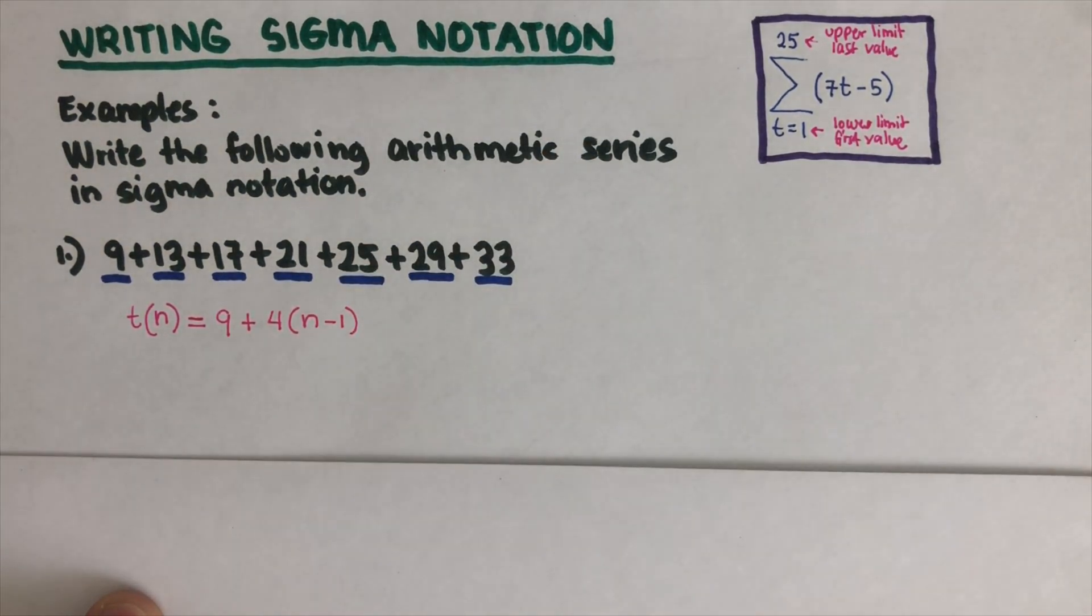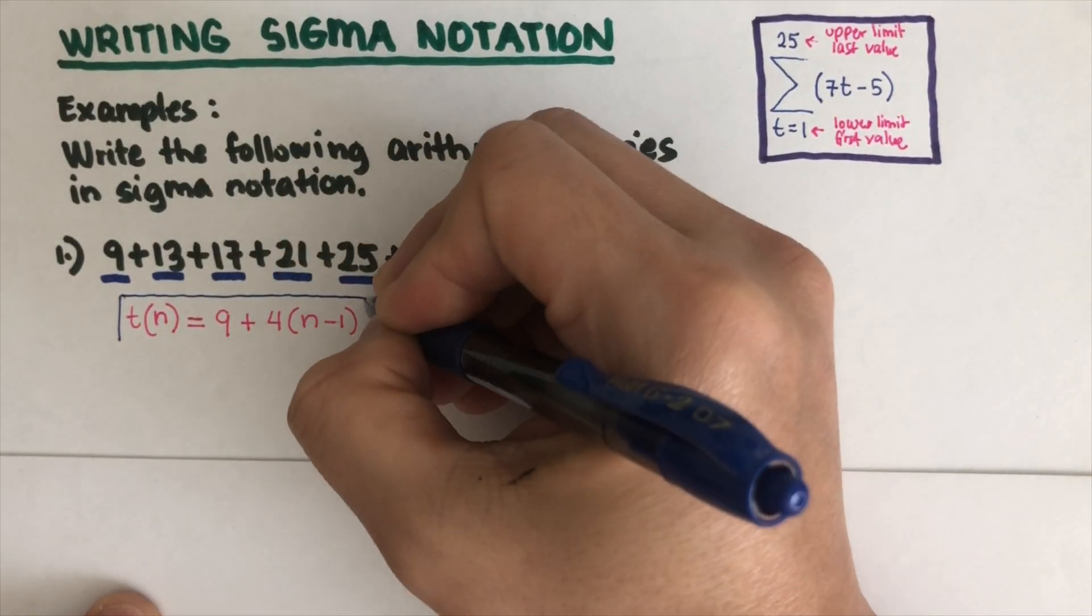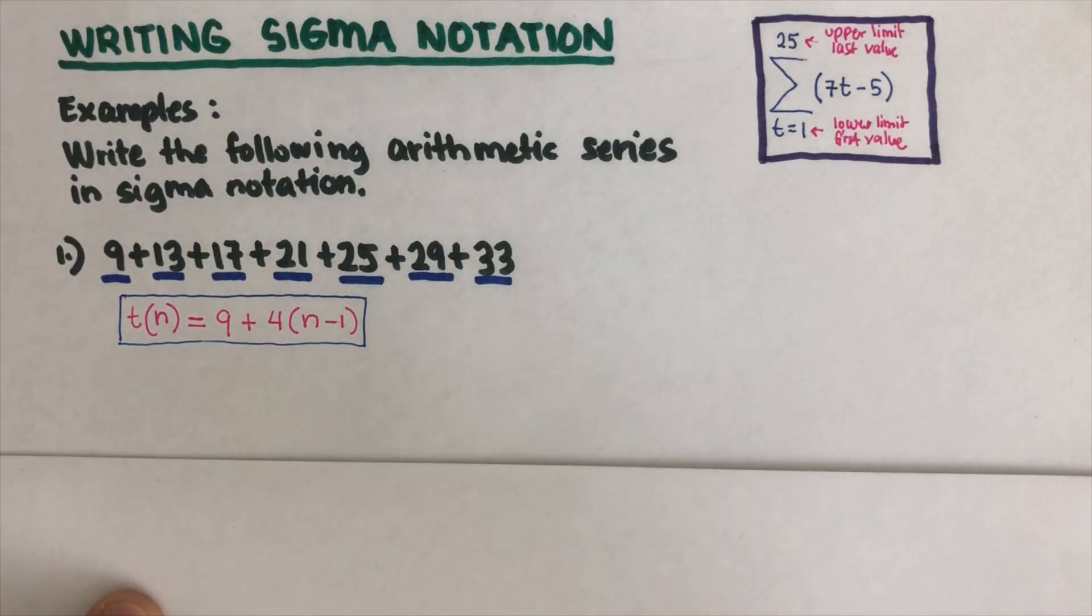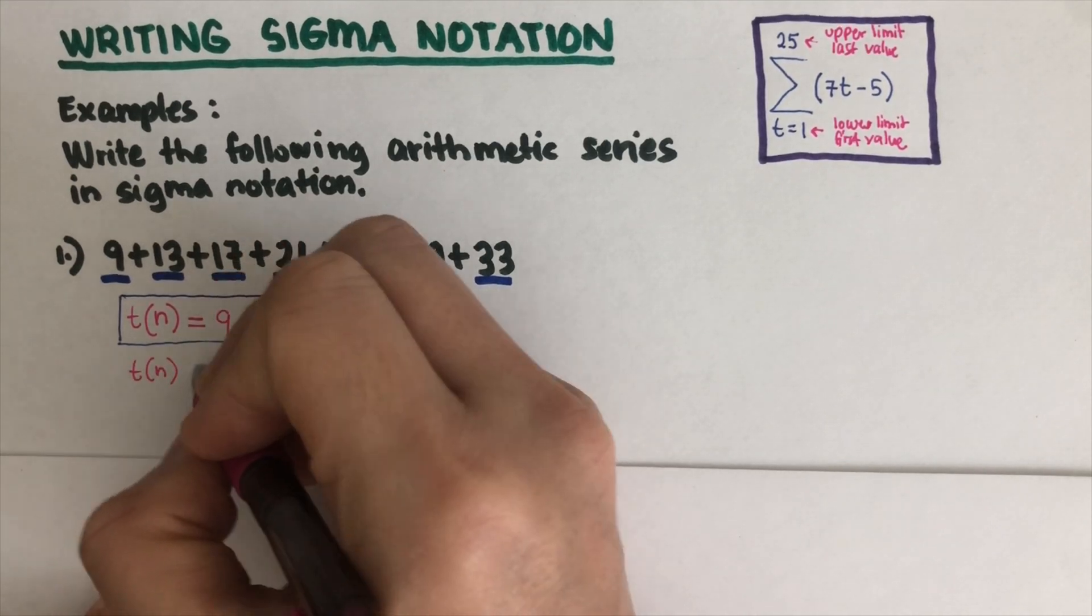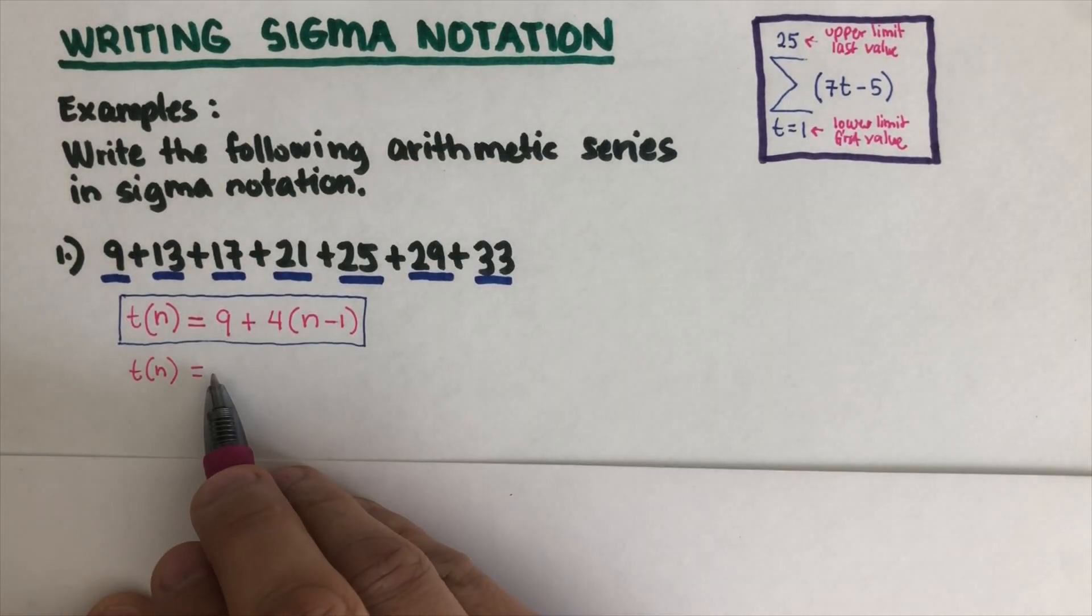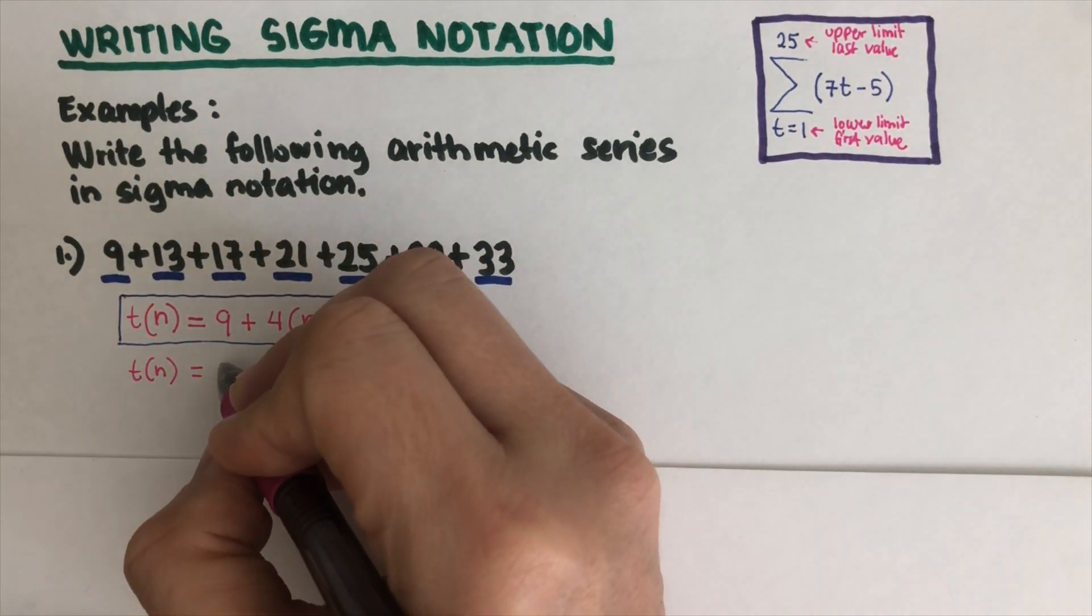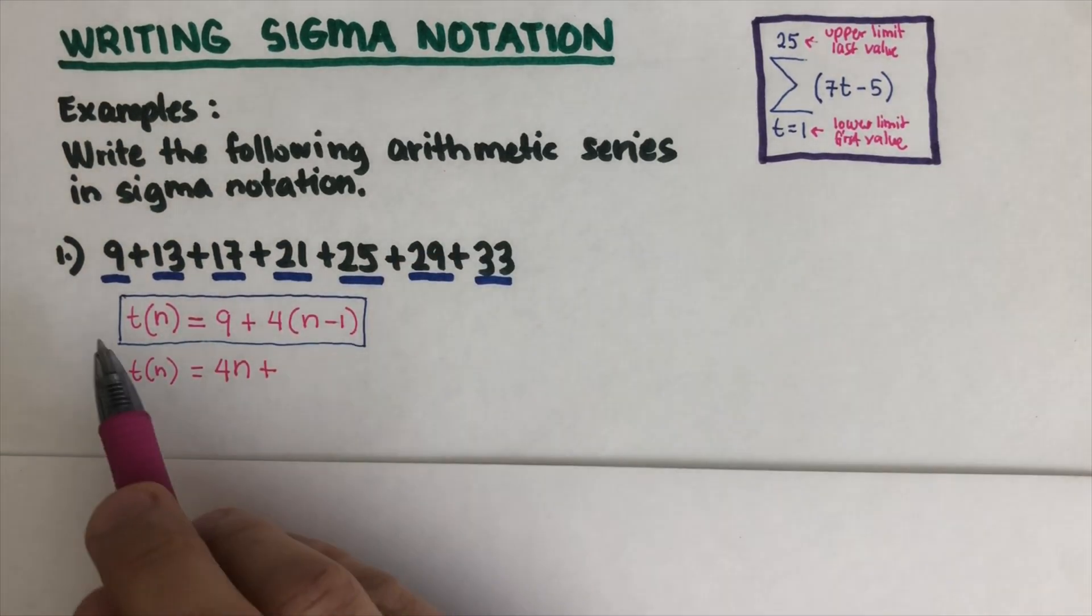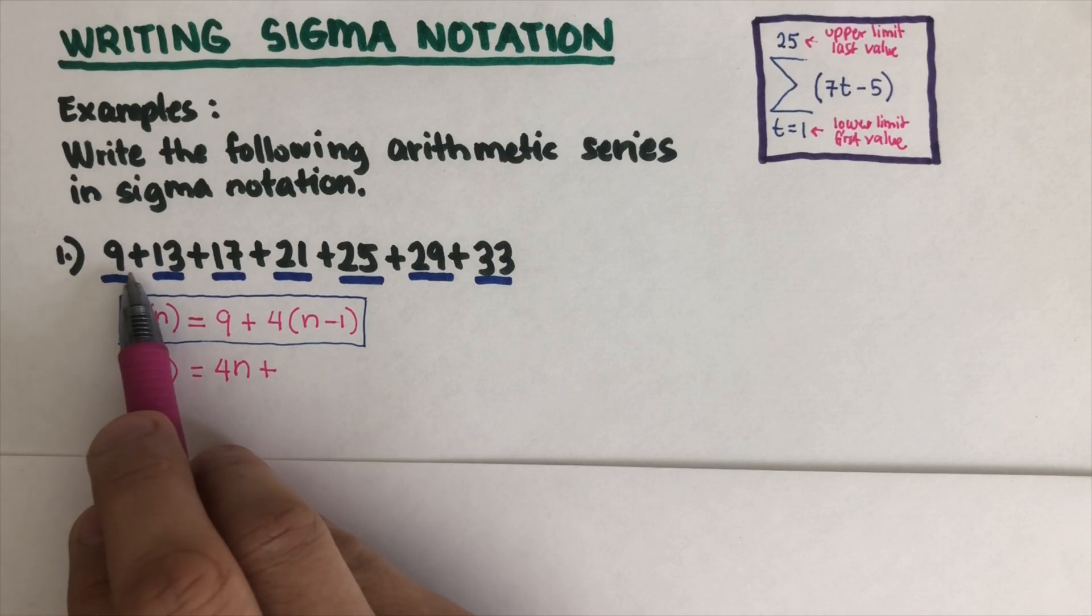This is the first way of writing the equation. The other way to write the equation is similar to y equals mx plus b. So t(n) is equal to, first we're gonna write how much does it grow by, so that would be 4n plus what is the zero term.